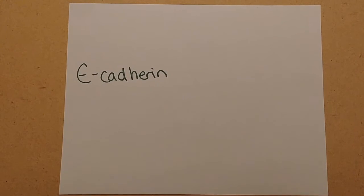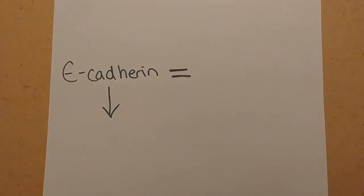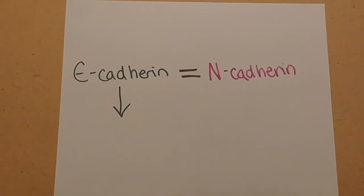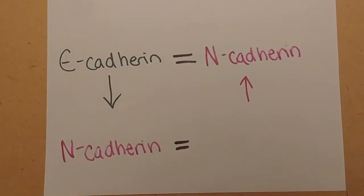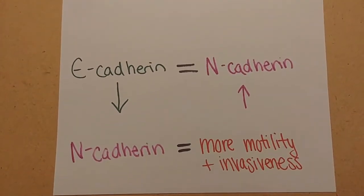The decrease in E-cadherin is also associated with an increase in N-cadherin, a protein that in epithelial cells induces changes in morphology to a fibroblastic phenotype, rendering the cells more mobile and invasive.